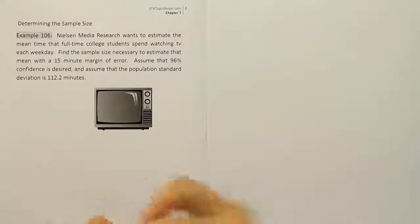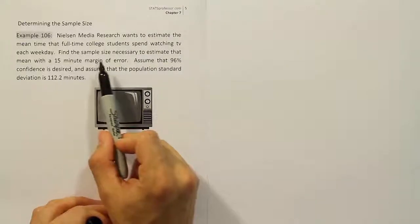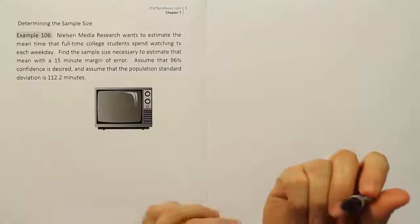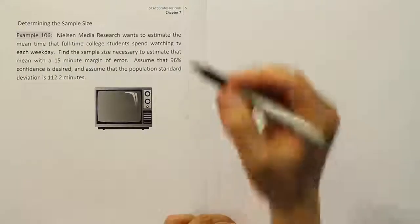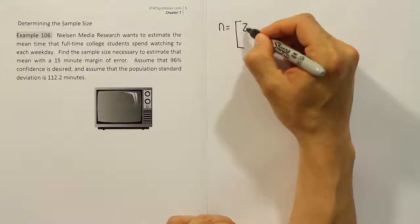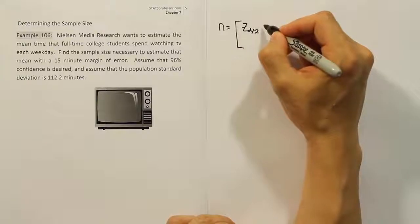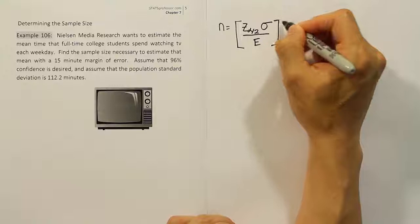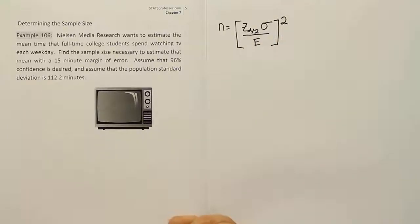In this problem, we're finding the sample size necessary to estimate the mean. We'll write down the formula: n equals (Z_α/2 times σ divided by the margin of error) squared. That's the formula we use for the sample size when estimating the population mean.